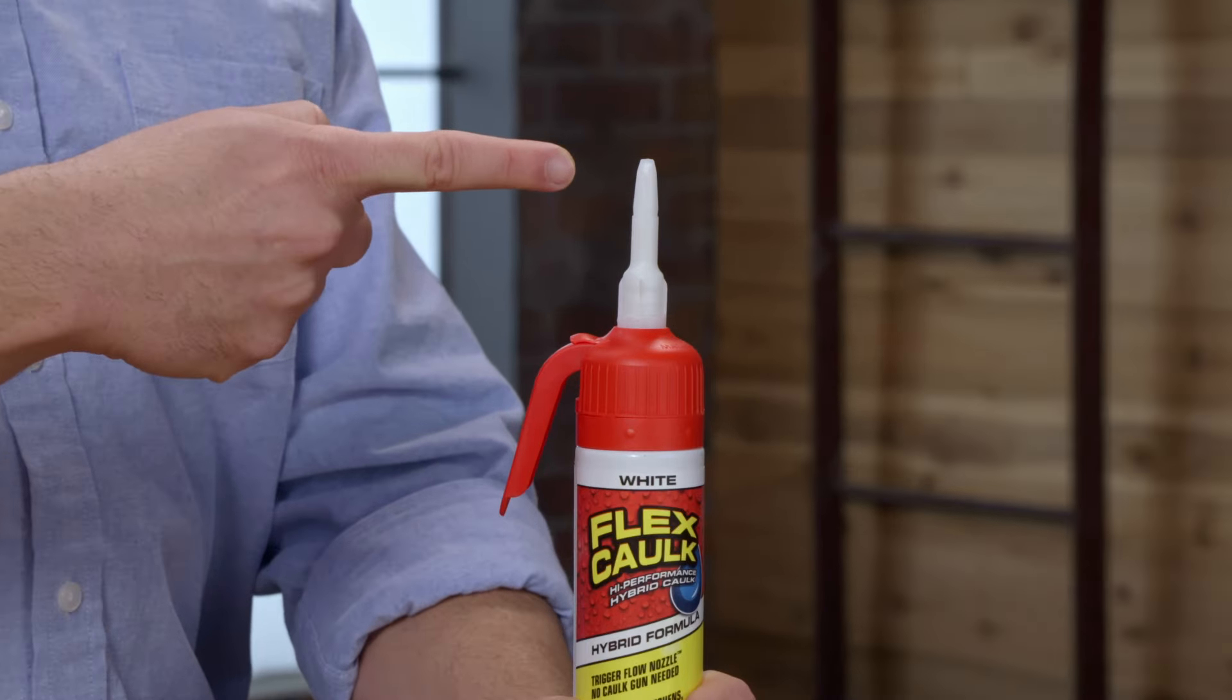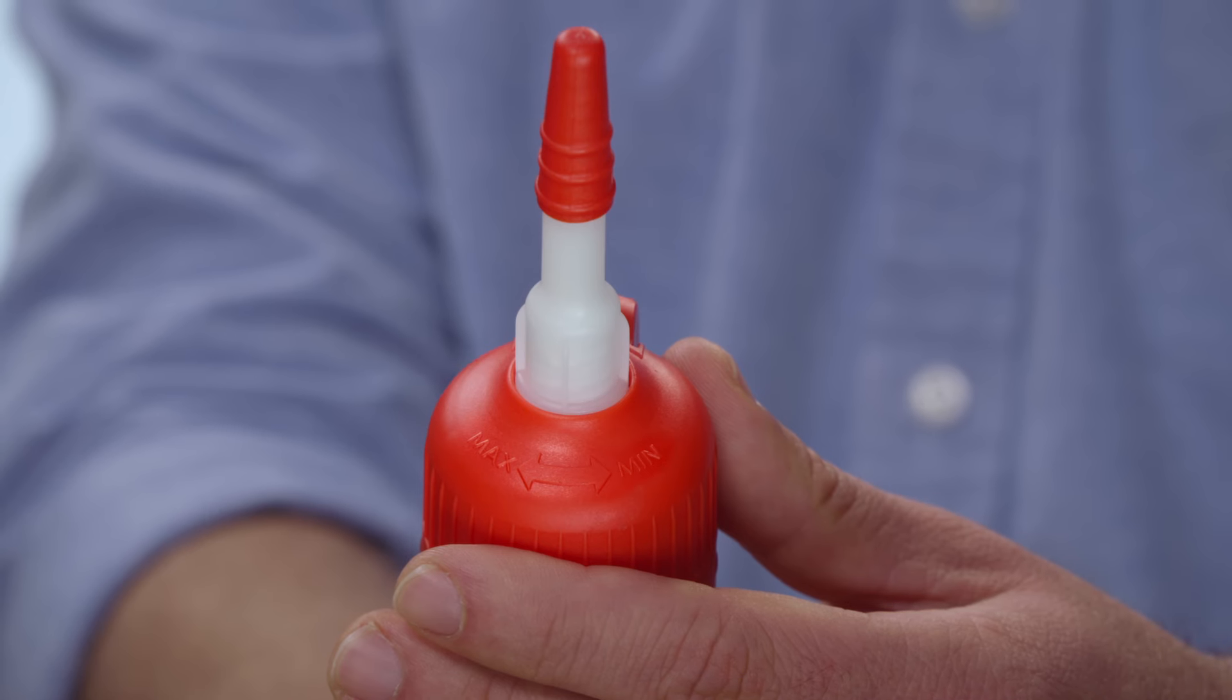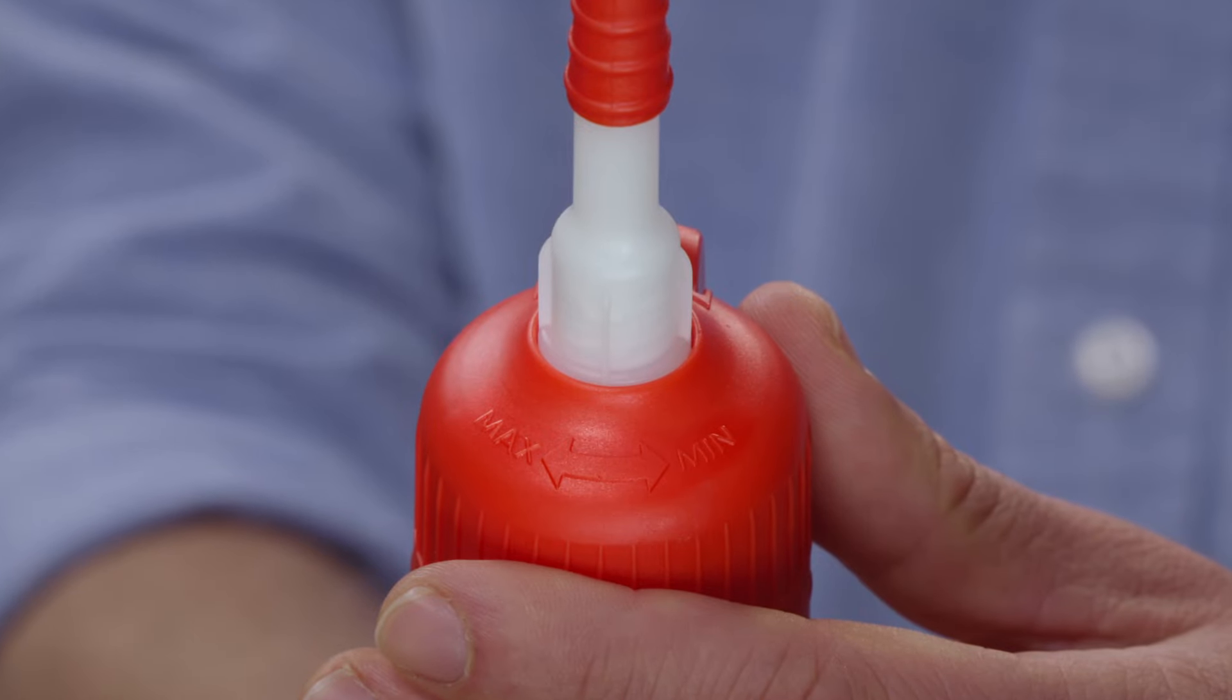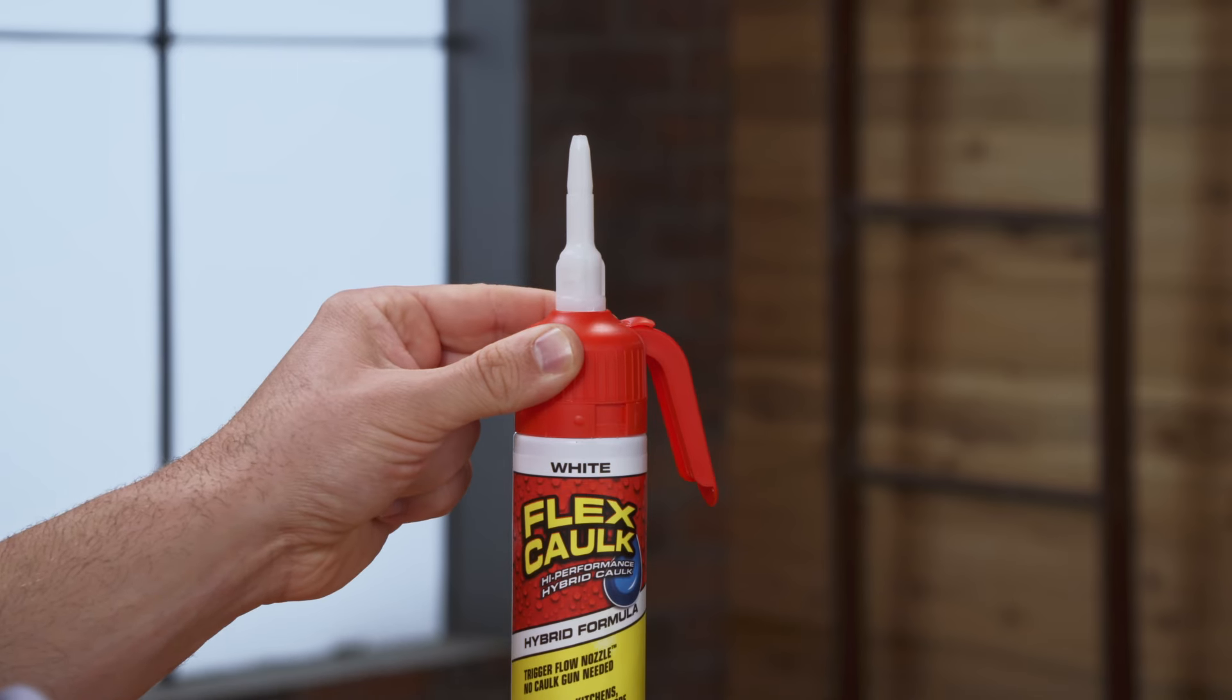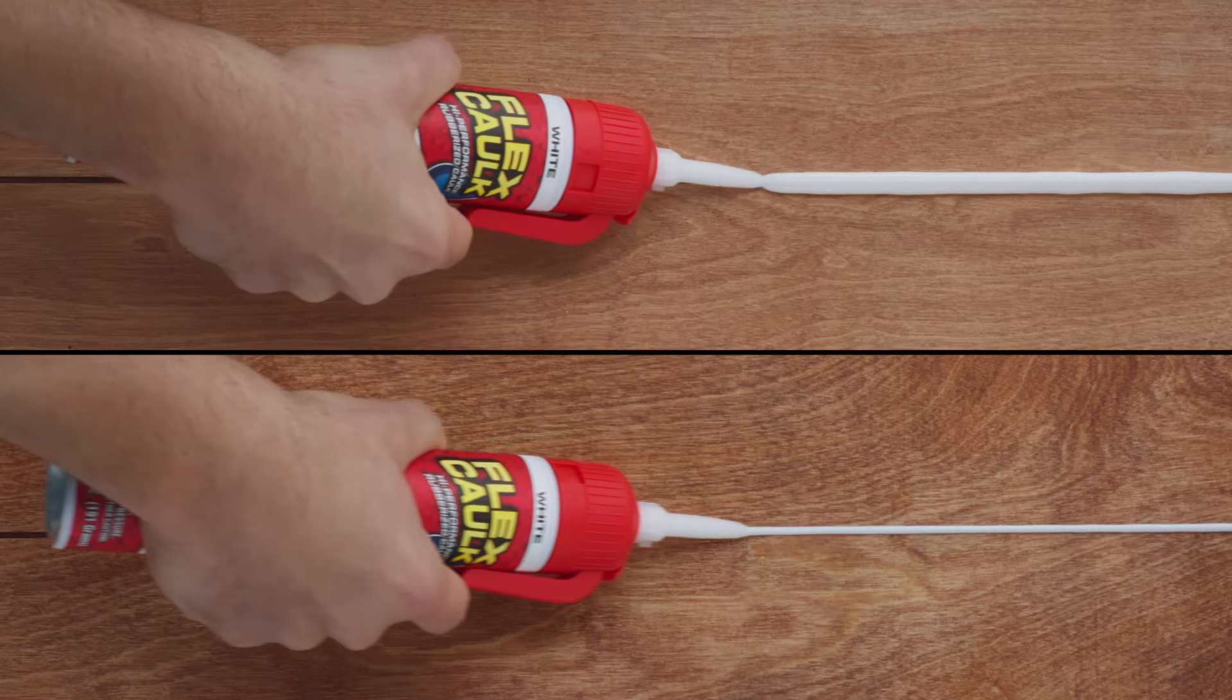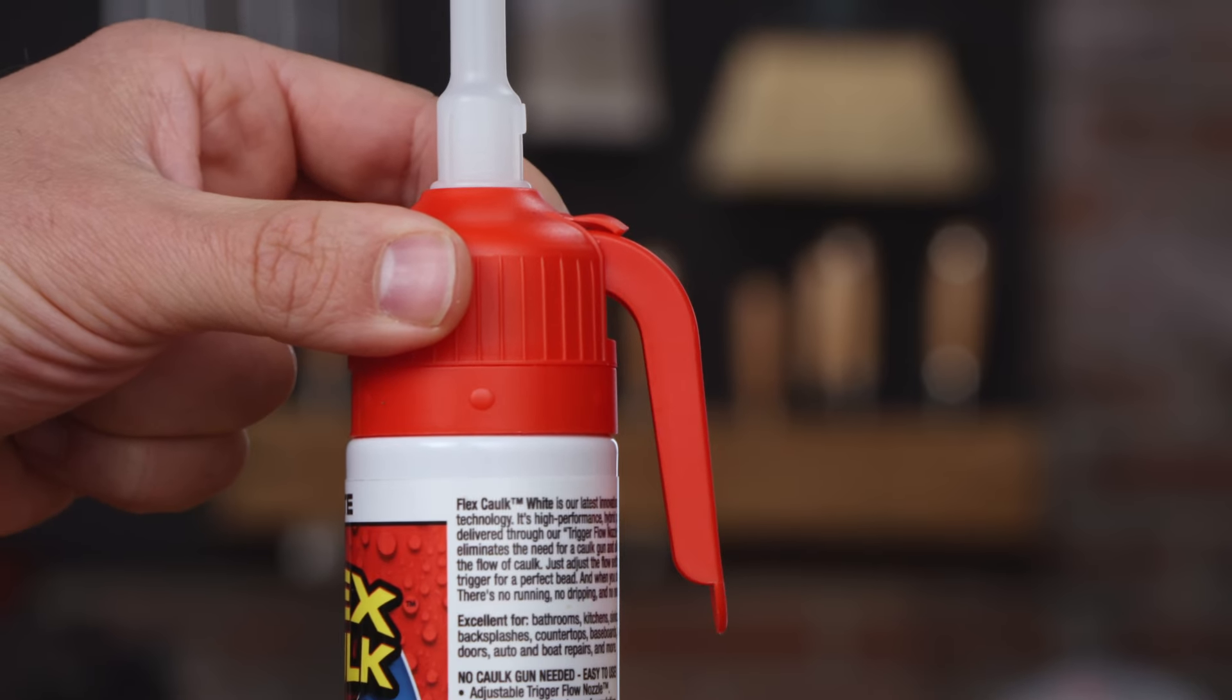You don't have to cut the nozzle because our nozzle is pre-cut and ready to go. If you look closely at the top of the red trigger flow nozzle, you'll see the words min and max. By turning the trigger flow nozzle one way or the other, you'll be able to adjust the flow of the caulk.